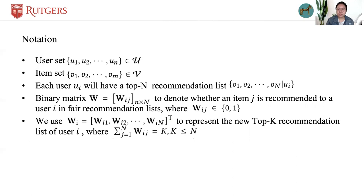Specifically, if item j is recommended to user i, then we have W_ij equals 1, else W_ij equals 0.